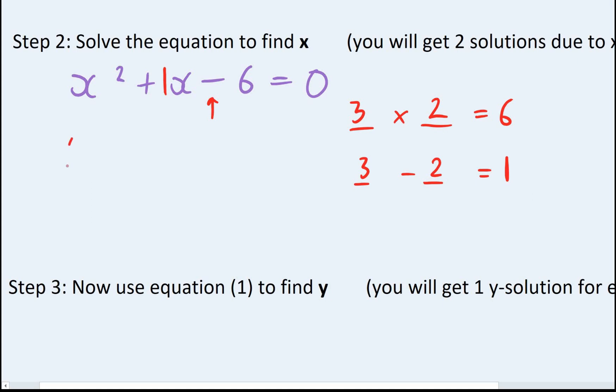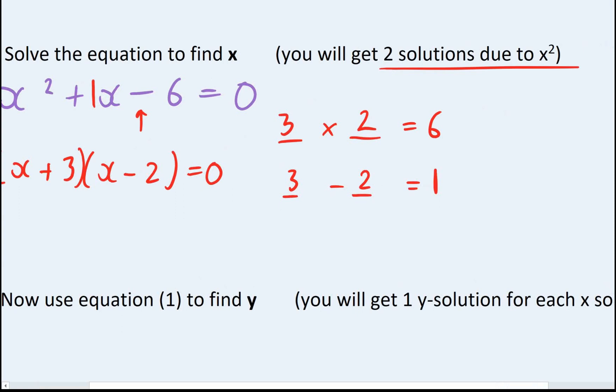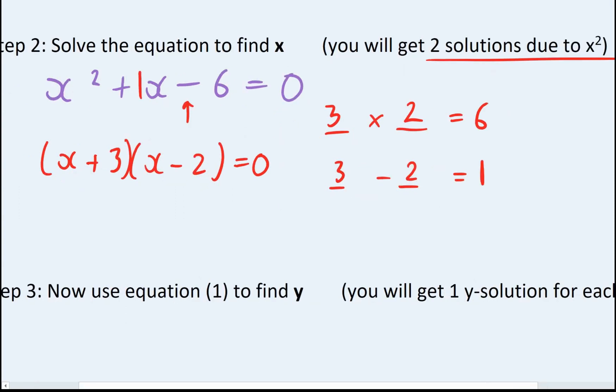So therefore, this will factorise into x plus three, x minus two equals zero, which gives me two solutions. So again, this is different from just normal ones, because as an x squared term, you will always get two solutions. Very rarely, it will be the same solution twice, but you're looking to find two solutions.